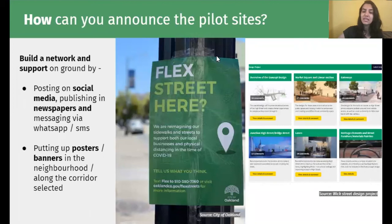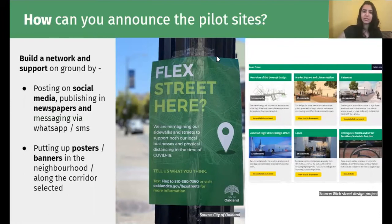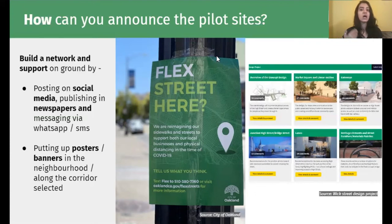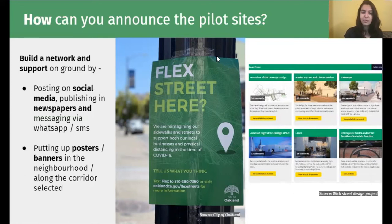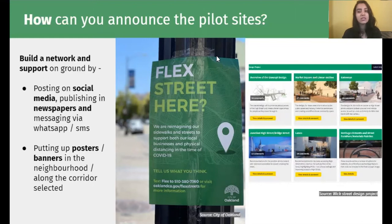There are two main ways in which you can announce these pilot sites to the community. One is online and the other is offline. Online, you could use your social media channels, websites, or any other online portals where your citizens are constantly interacting with you. You can put it up on these channels saying that you have chosen a certain location — your neighbourhood, the corridor — for the pilot interventions, and let your citizens know. Offline, you could roll out the pilot locations in newspapers, any other publications, posters, or banners put up along the routes to inform the community.